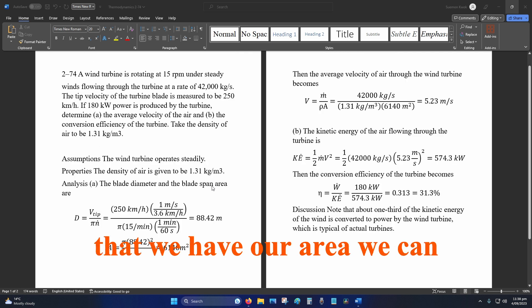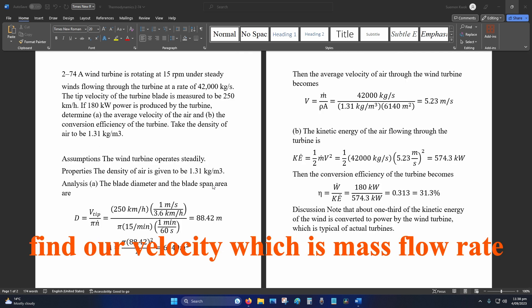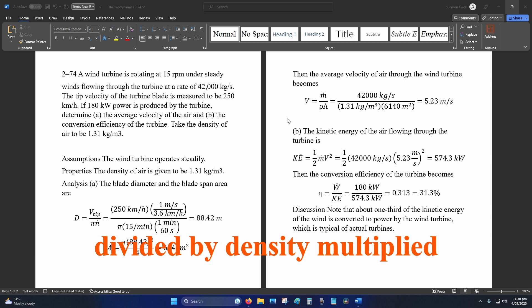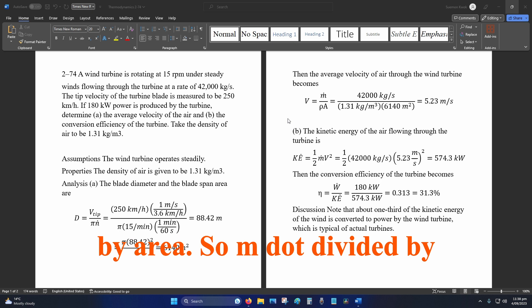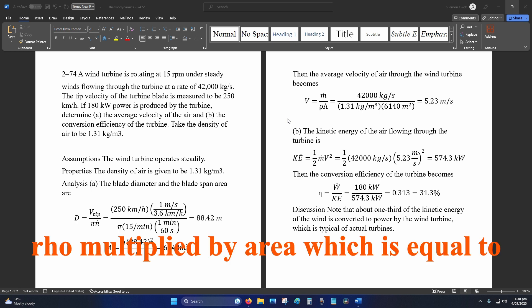Now that we have the area, we can find the velocity, which is mass flow rate divided by density times area. So m-dot divided by rho times area.